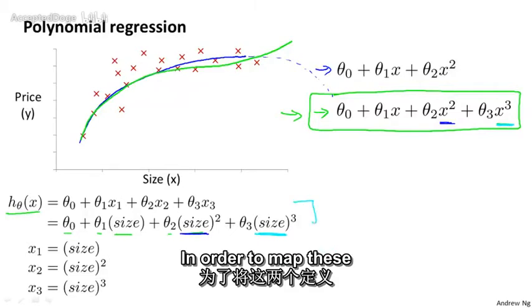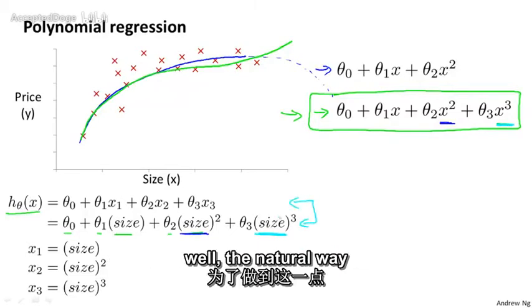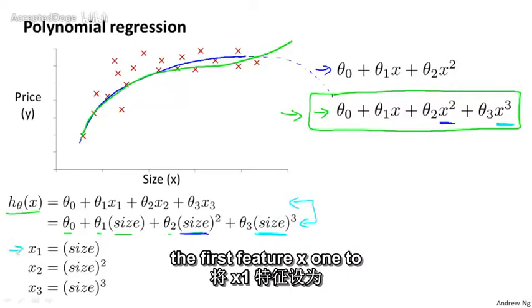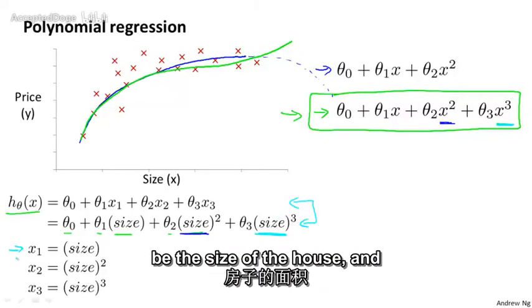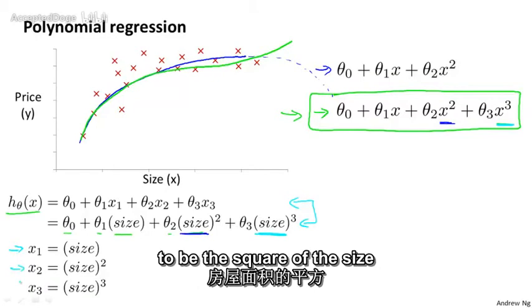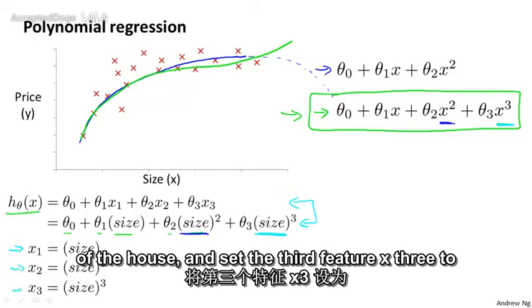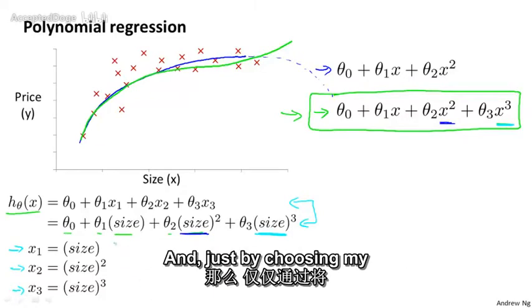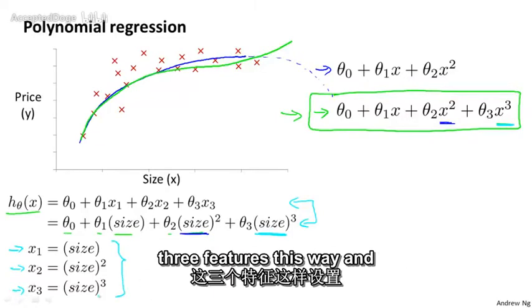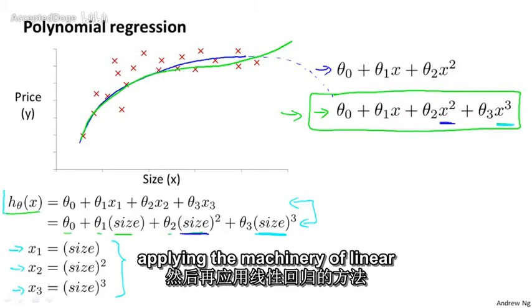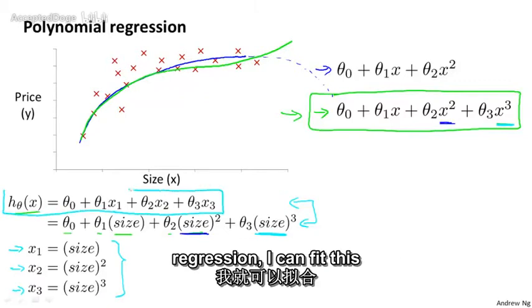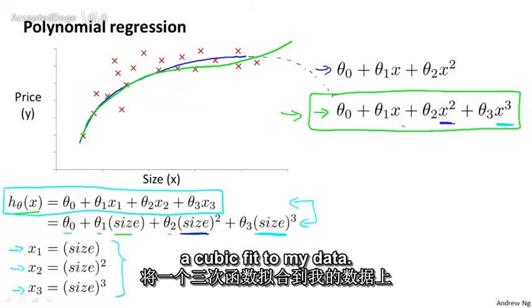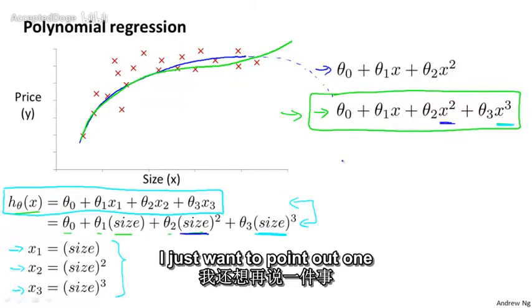In order to map these two definitions to each other, well, the natural way to do that is to set the first feature x one to be the size of the house, and set the second feature x two to be the square of the size of the house, and set the third feature x three to be the cube of the size of the house. And just by choosing my three features this way, and applying the machinery of linear regression, I can fit this model and end up with a cubic fit to my data.